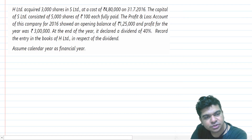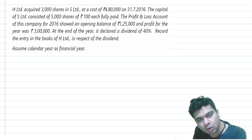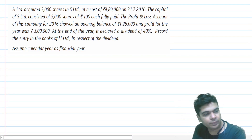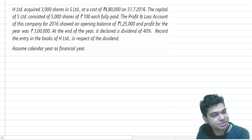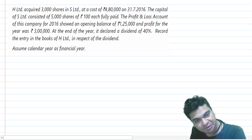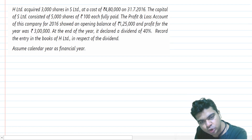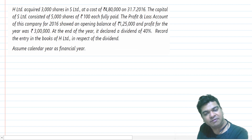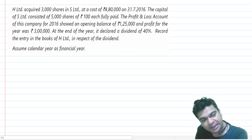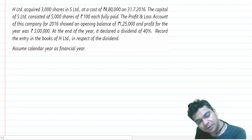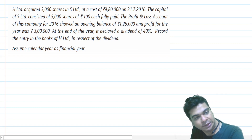H Limited acquired 3,000 shares in S Limited at a cost of Rs. 4,80,000 on 31st July 2016. The capital of S Limited consisted of 5,000 shares of Rs. 100 each, fully paid. The profit and loss account for 2016 showed an opening balance of Rs. 1,25,000 and profit for the year was Rs. 3,00,000. At the end of the year, it declared a dividend of 40%. Record the entry in the books of H Limited in respect of the dividend. Assume calendar year as the financial year.